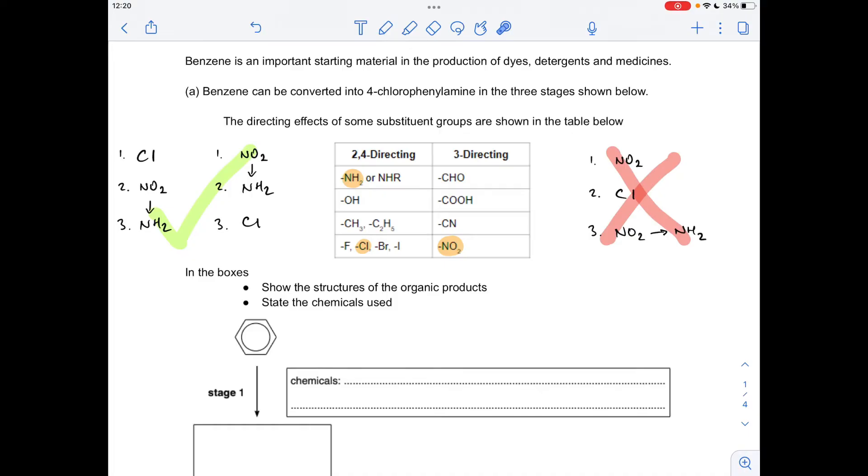Okay so part A, as well as testing your knowledge of the organic reaction pathways, it's also testing your knowledge on directing groups. So you'll see on the left hand side there's actually two orders you can do the reactions in and on the right there I've got the order that you can't do it in. So I'll just quickly explain that and then we'll just fill in the boxes.